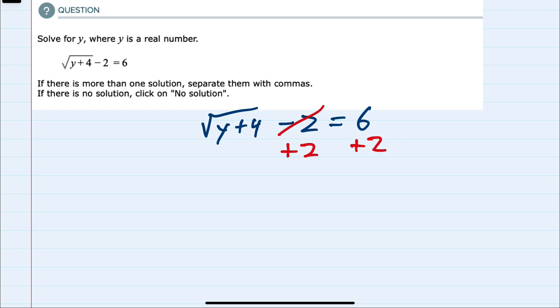That will cancel the minus 2 on the left and leave me with the square root of y plus 4 on the left-hand side of the equation, and a 6 plus 2, or 8, on the right-hand side of the equation.